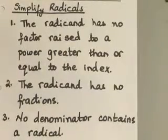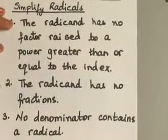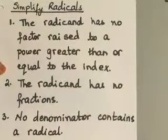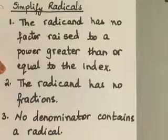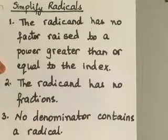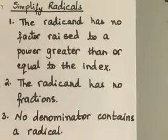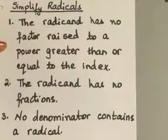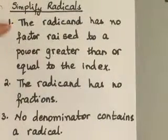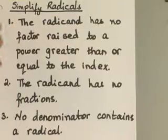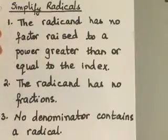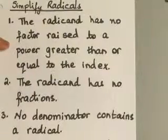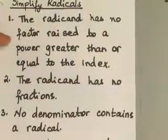Now, the first thing you have to look for is that the radicand has no factor raised to a power greater than or equal to the index. So it basically means if your radicand is 2 to the second power and your index is 3, then your 2 and 3 don't have anything greater than or equal to your index. You have to make sure that you don't have a situation like that.